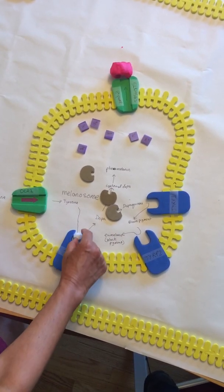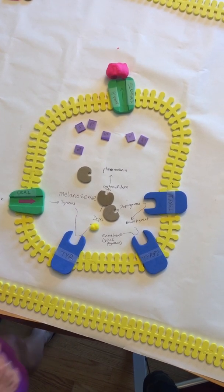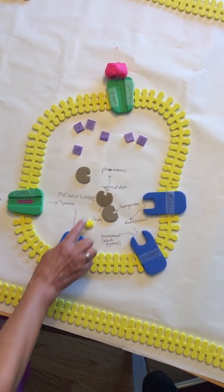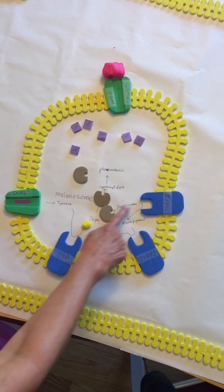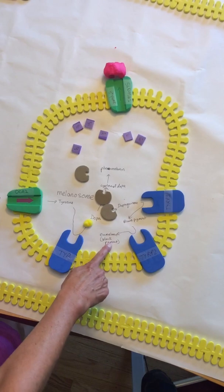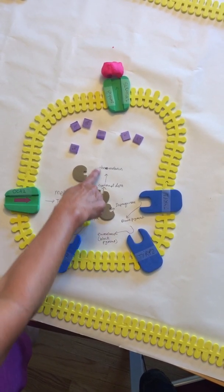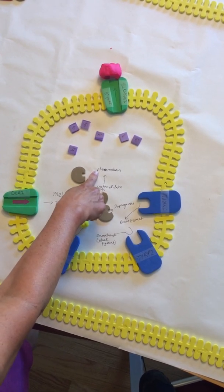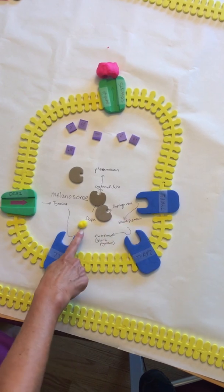Now dopa has two different pathways it can go. It can go this way to become the brown pigment and black pigment, or a different enzyme could work on it and it'll become the pheomelanin, which is the reddish-orange pigment. Let's go this pathway first.